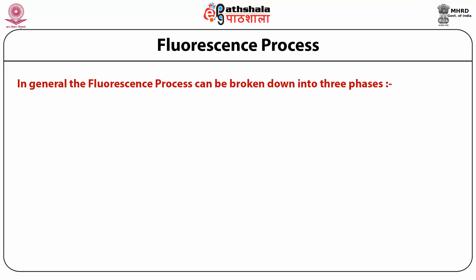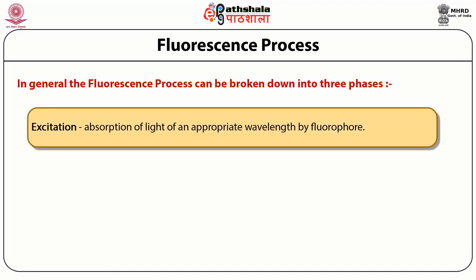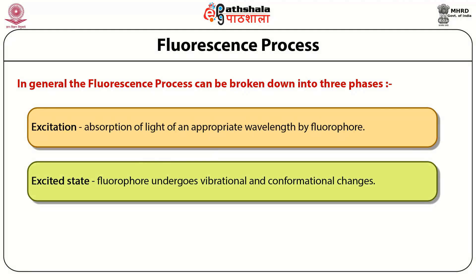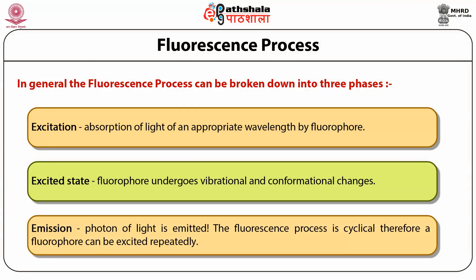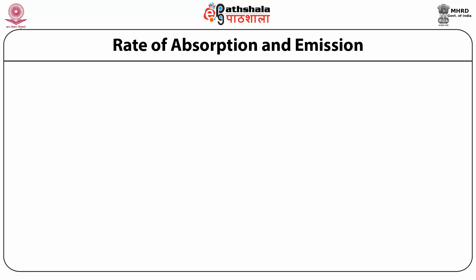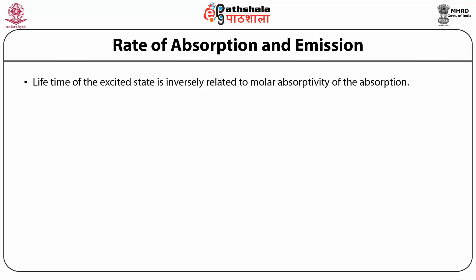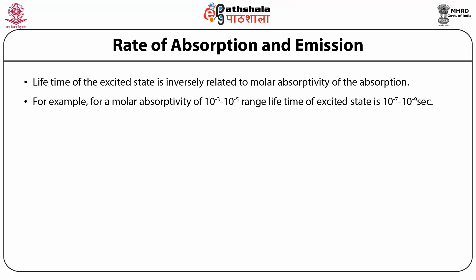In general, the fluorescence process can be broken down into three phases. One: excitation — absorption of light of an appropriate wavelength by a fluorophore. Two: excited state — the fluorophore undergoes vibrational and conformational changes. Three: emission — when it relaxes, a photon of light is emitted. The fluorescence process is cyclical, so a fluorophore can be excited repeatedly. The lifetime of the excited state is inversely related to the molar absorptivity of the absorbed light; for a molar absorptivity of 10 to the power 3 to 10 to the power 5, the lifetime ranges from 10 to the power minus 7 to 10 to the power minus 9 seconds.